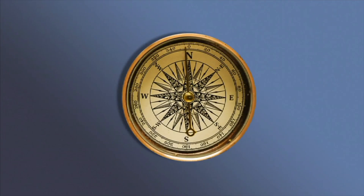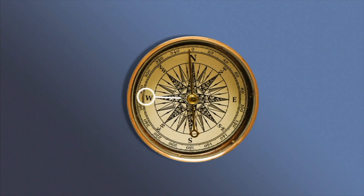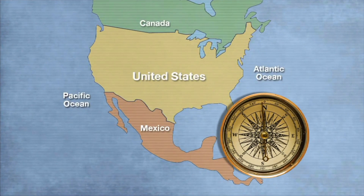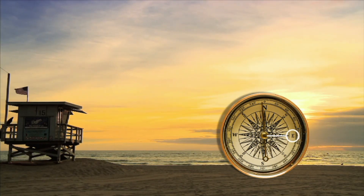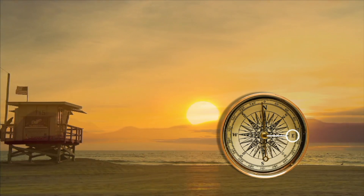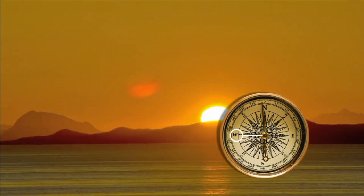The position of an object could be in one of the four cardinal directions: north, south, east, and west. Canada is to the north of the United States. Mexico is to the south of the United States. The sun rises in the east and sets in the west.